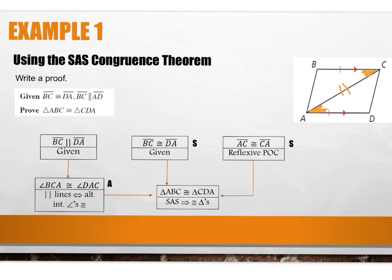You must have all three arrows pointing to the final box. If you're missing an arrow, you haven't proven the triangles congruent yet. You need all three necessary parts for the side-angle-side theorem.